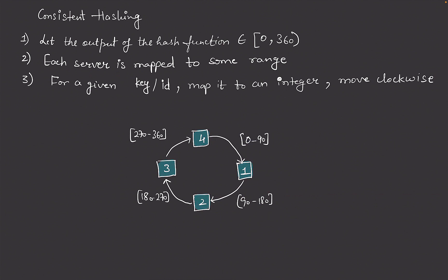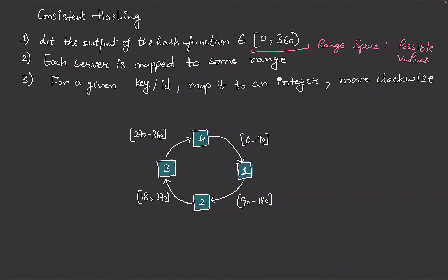In consistent hashing, let's say the output of our hash function belongs to zero to 360. We map some range from this hash space and divide it across different servers. For example, server one handles all requests whose hash is between 0 and 90, server two handles 90 to 180, server three handles 180 to 270, and server four handles 270 to 360.